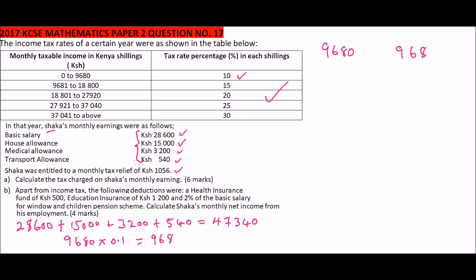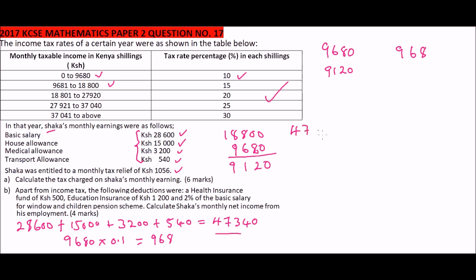For the second bracket, we subtract nine thousand six hundred and eighty from eighteen thousand eight hundred to get the bracket width of nine thousand one hundred and twenty shillings. We then check how much of the taxable income falls into this bracket by subtracting nine thousand six hundred and eighty from forty-seven thousand three hundred and forty.